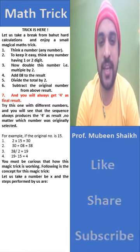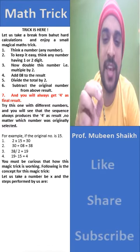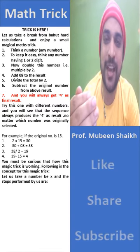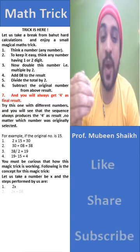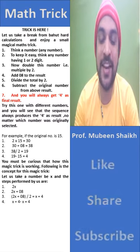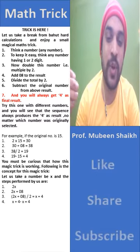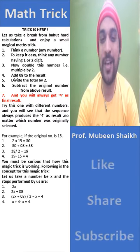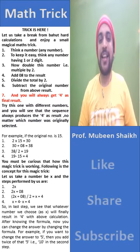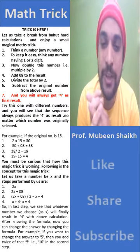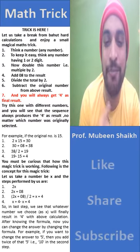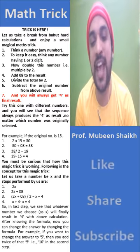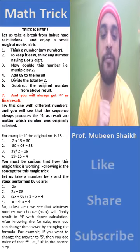Here is the concept behind this magic trick. Let us take a number as x. The steps performed are: x → 2x → 2x + 8 → (2x + 8) ÷ 2 = x + 4 → then x + 4 − x = 4. So in the last step, we see that whatever number we choose as x will finally result in 4.